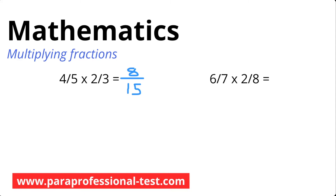The last step is to simplify. Is there a number that goes into both 8 and 15? I begin with 2 — 2 goes into 8 but not 15. I try 3 — goes into 15 but not 8. I try 4 — goes into 8 but not 15. I try 5 — goes into 15 but not 8. 6 doesn't go into either evenly, neither does 7, and 8 doesn't go into 15 evenly. So 8 over 15 is already simplified to lowest terms. Let's move on to the next problem.